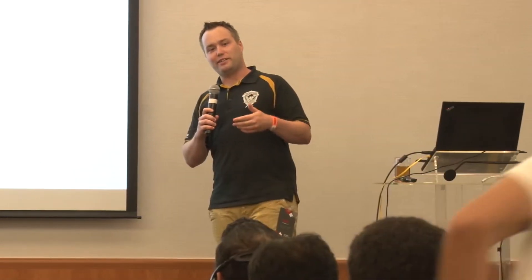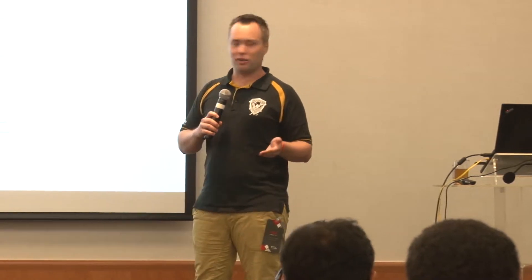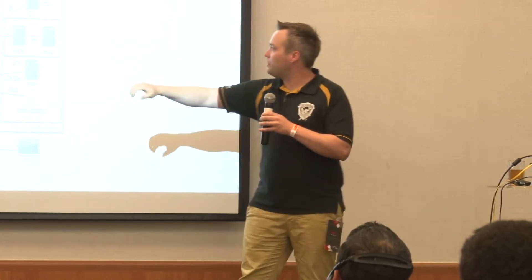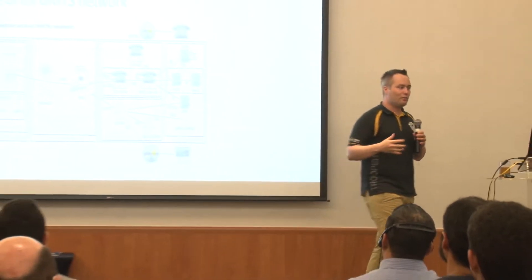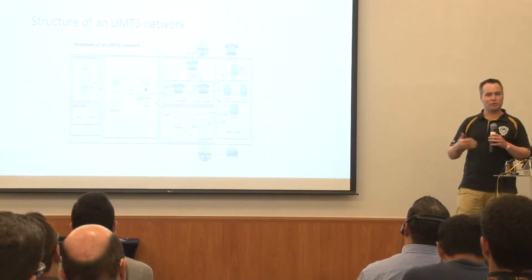If you want to go with UMTS, it's quite a similar setup but some newer components are needed because the modulation of the air interface is completely different, so we need a new base station. If you have a new base station, we also need some updates or enhancements of the management servers. But the core stays the same — there is no difference in the core between GSM and UMTS.